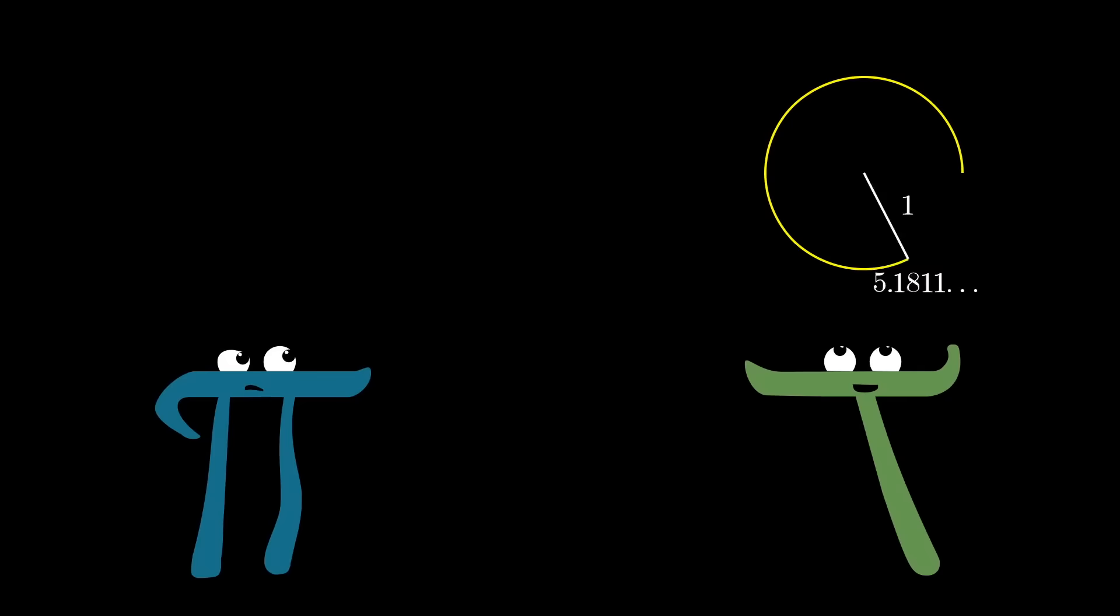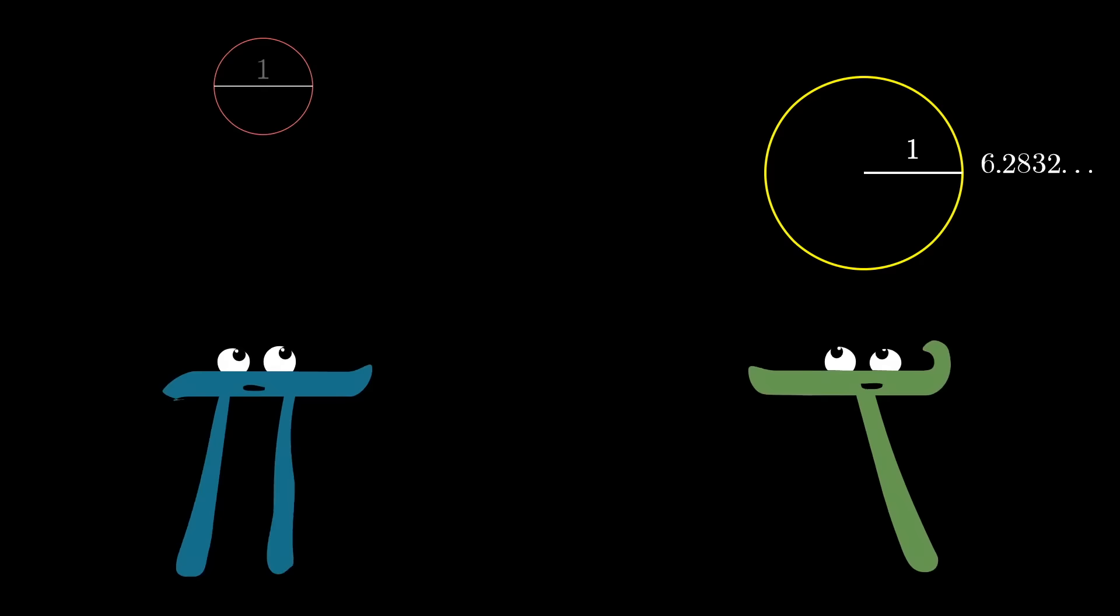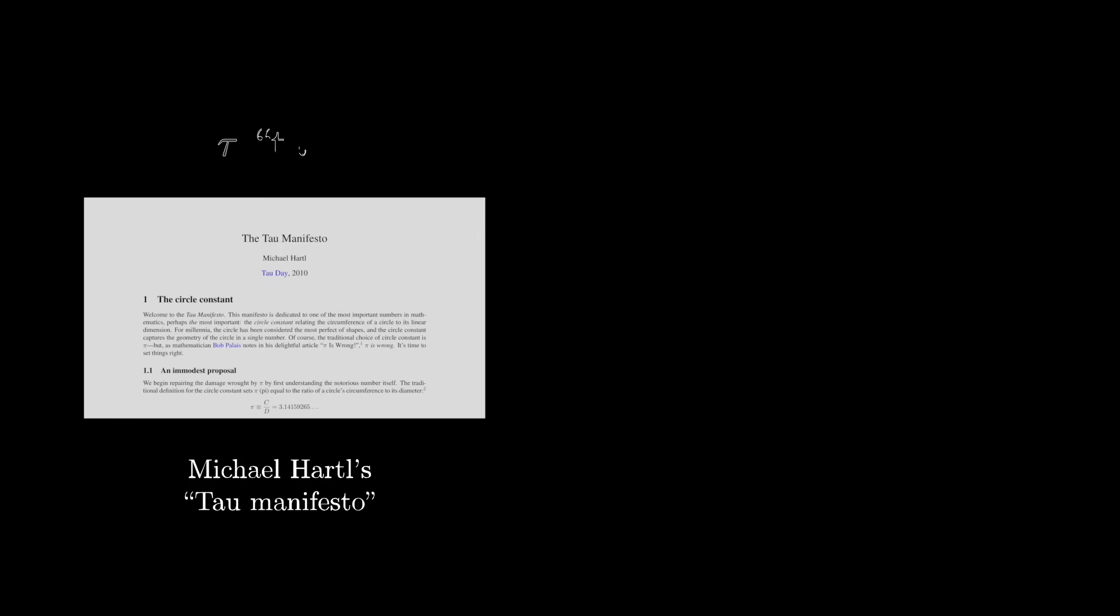I'm sure that you're already familiar with the whole pi versus tau debate. A lot of people say that the fundamental circle constant we should hold up should be the ratio of a circle's circumference to its radius, which is around 6.28, not the ratio to its diameter, the more familiar 3.14.